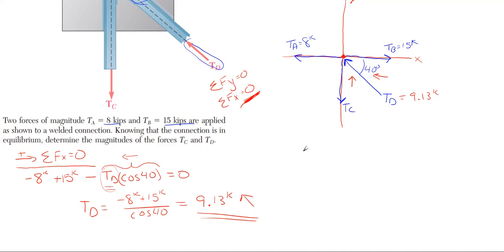So now we have TD is 9.13 kips. Only one more to go, and that is TC. TC we can get by using the FY equation. So let's go ahead and write that out. I'm going to take all my forces in the upper direction as positive. Everything in the negative direction will be going downward. So summing forces in the FY equal to 0, TA is not included because it's in the x. TB is not included because it's 100% in the x. We have TC, which is going downward, so minus TC. And then TD, which its component in the y direction will be upward.